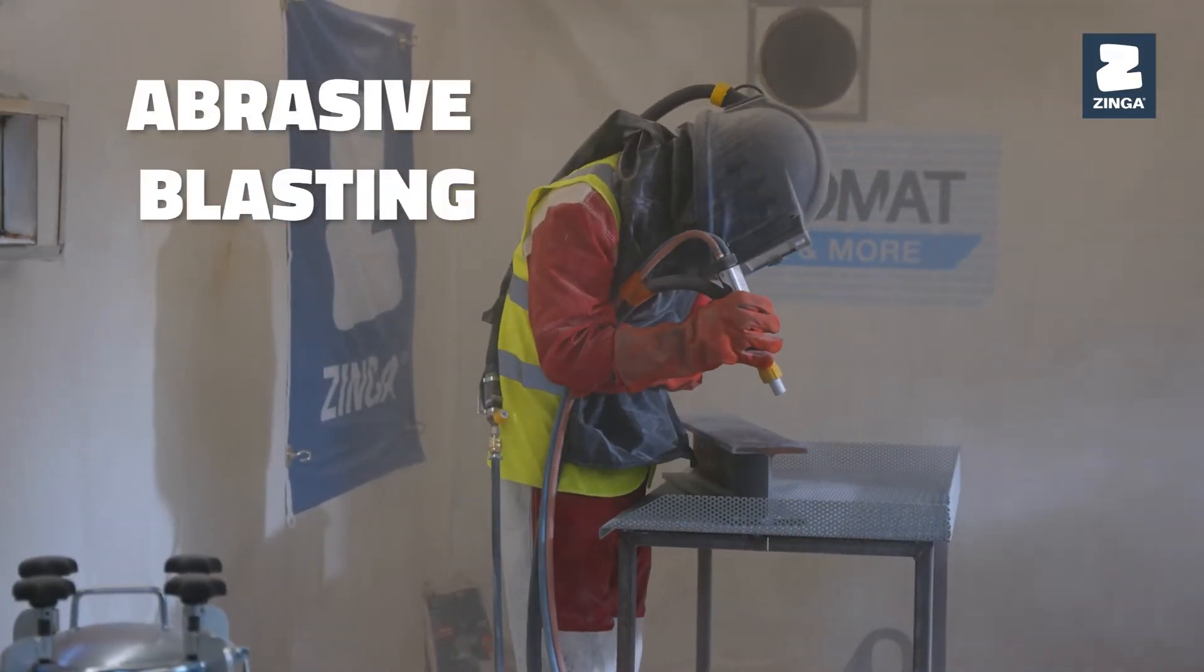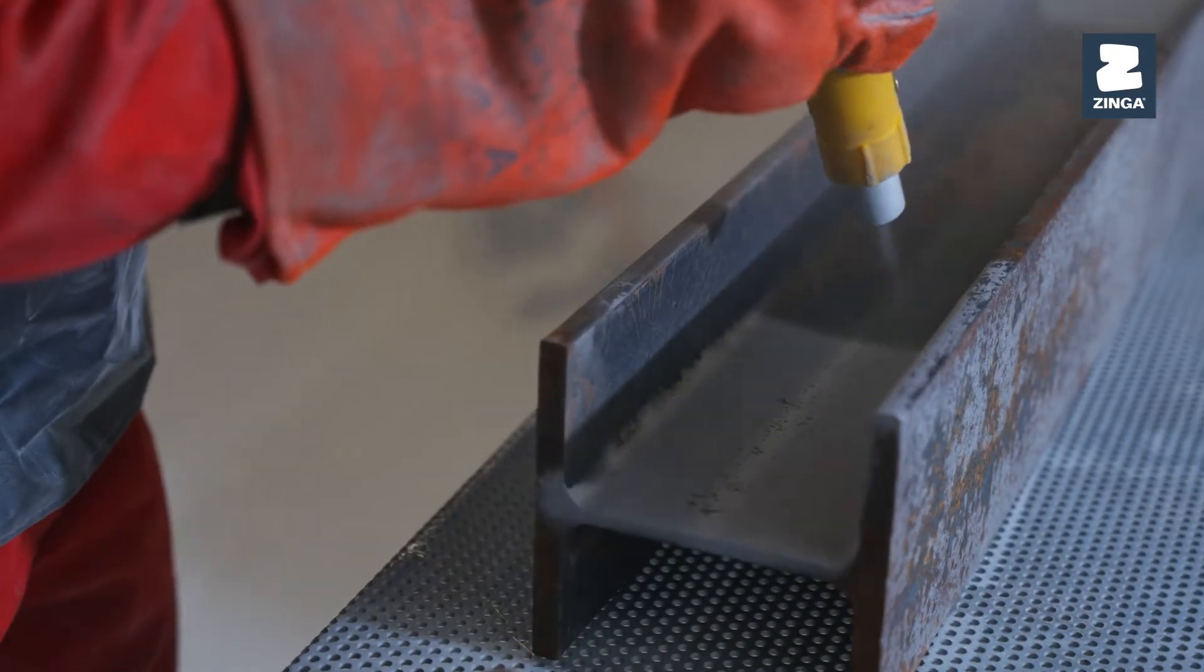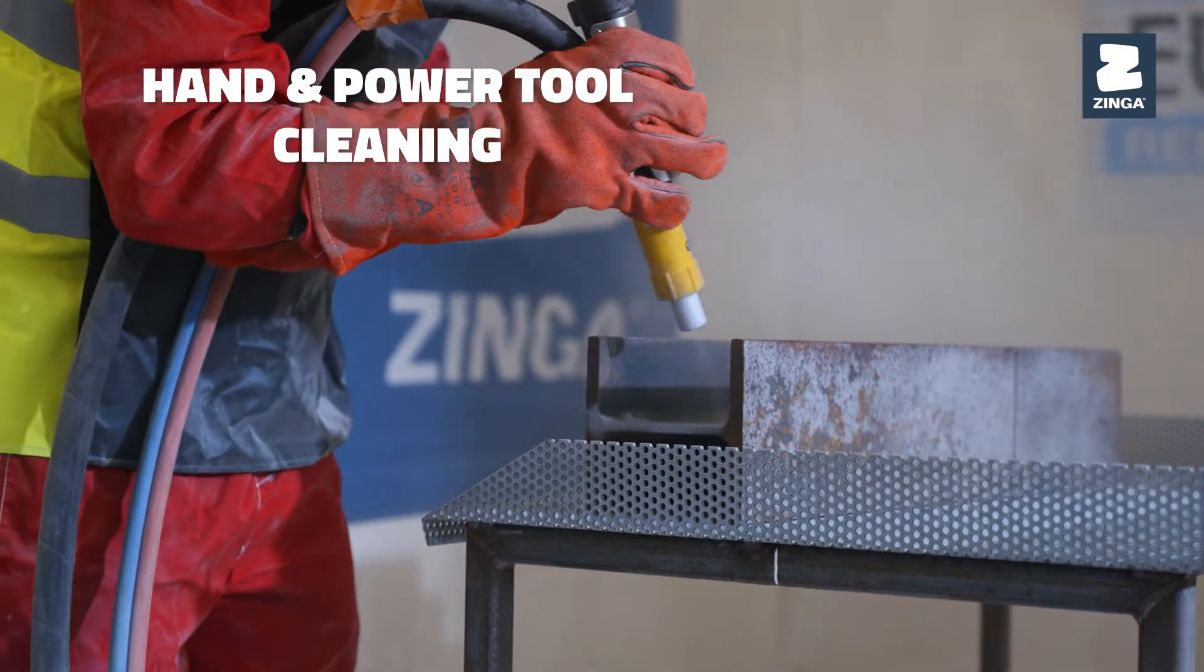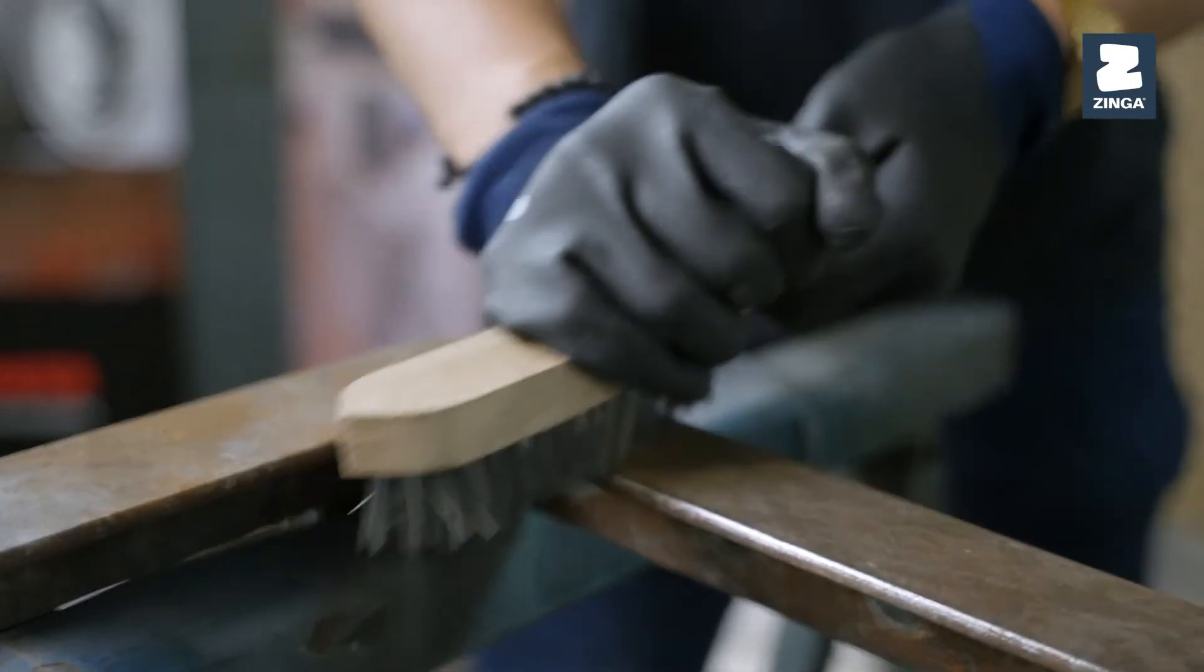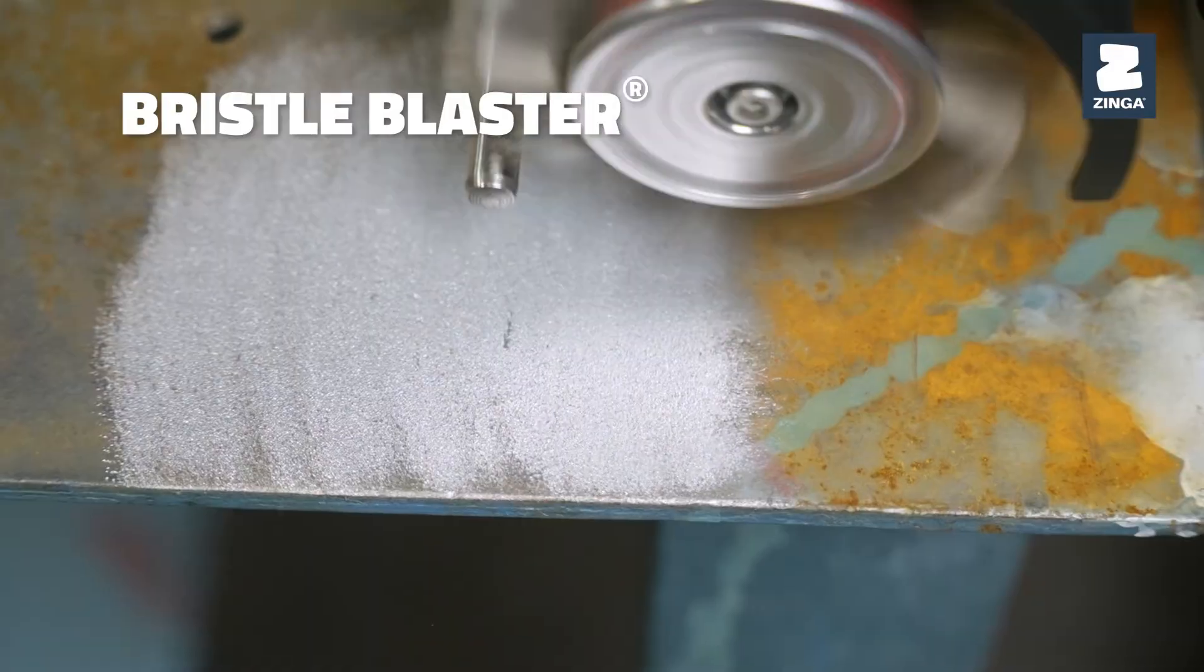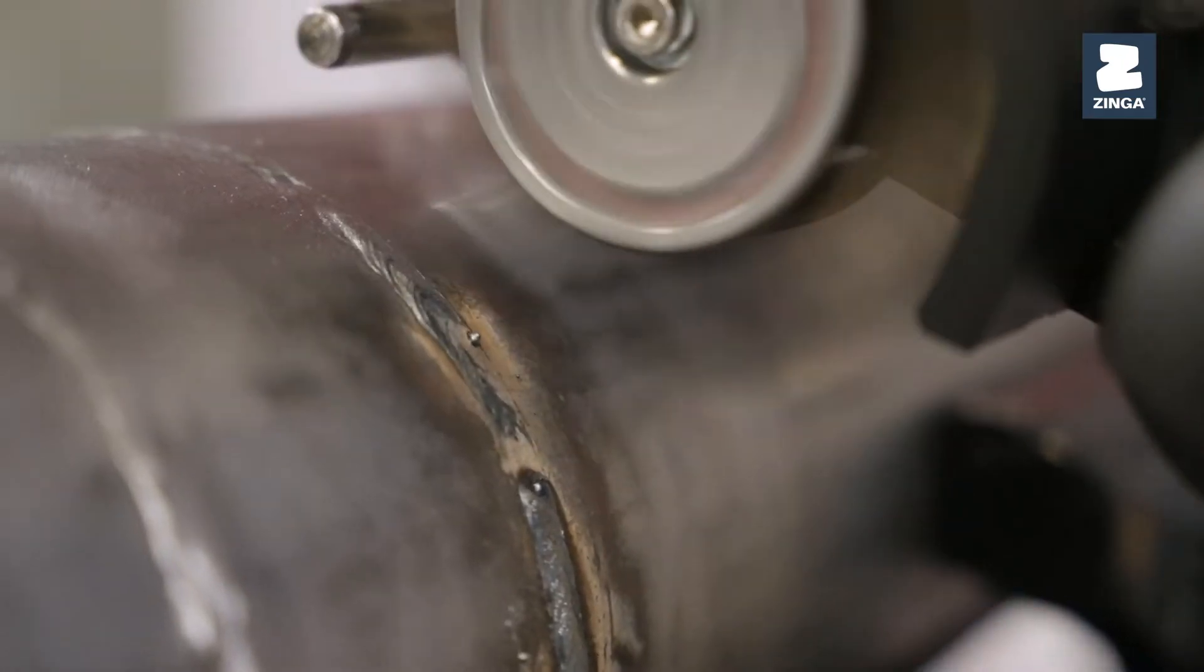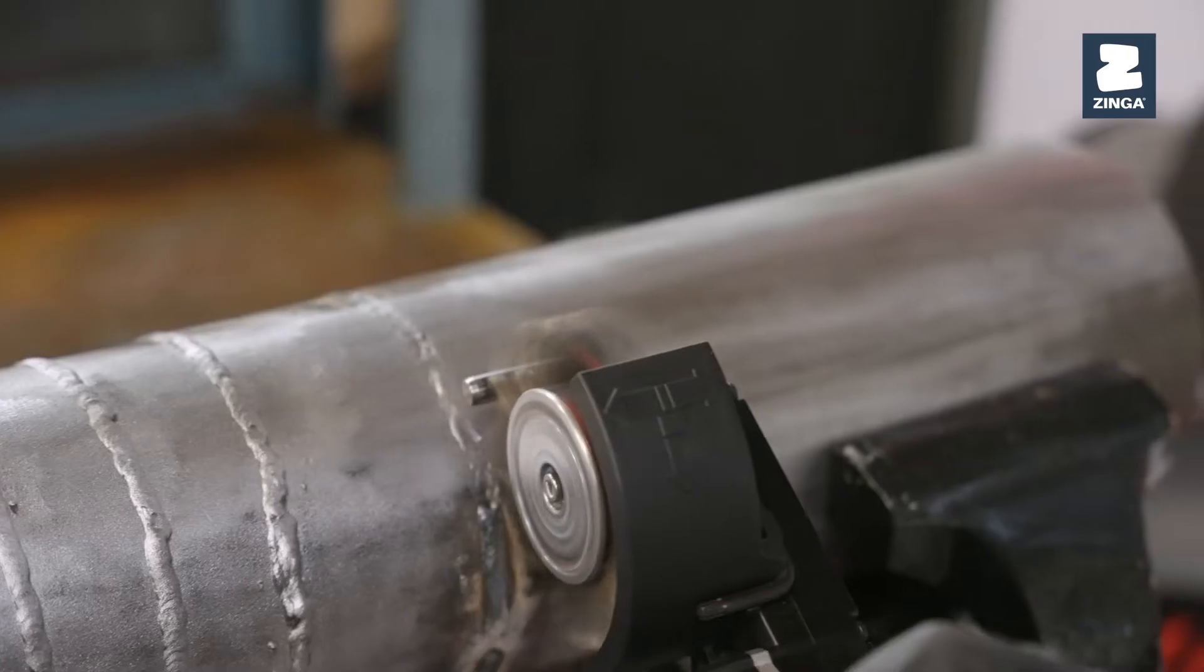Abrasive blasting is recommended for new steel and heavily corroded structures. Hand and power tool cleaning are suitable for small surfaces and repairs. Bristle blaster is an efficient tool offering exceptional results that mimic the texture and cleanliness obtained by grit blasting.